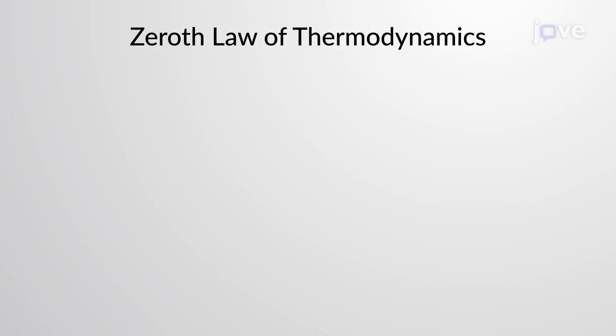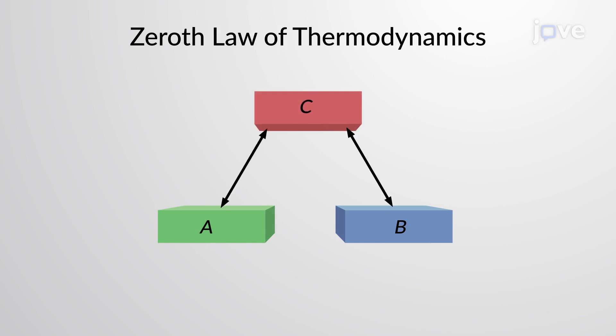The zeroth law of thermodynamics states that if any two bodies are in thermal equilibrium with a third body, they are also in thermal equilibrium with each other.